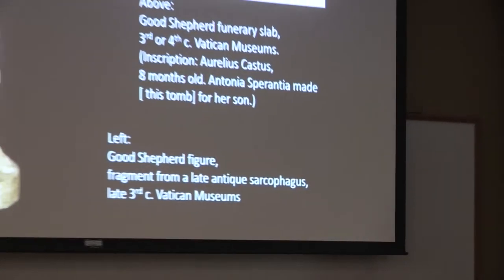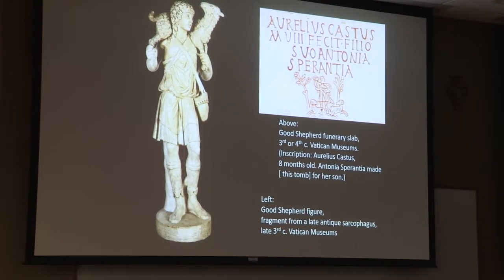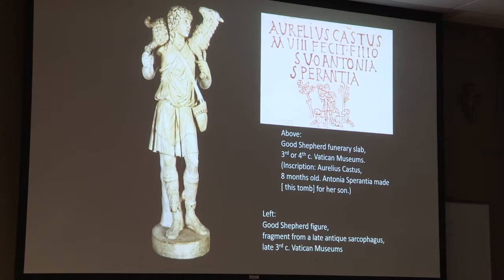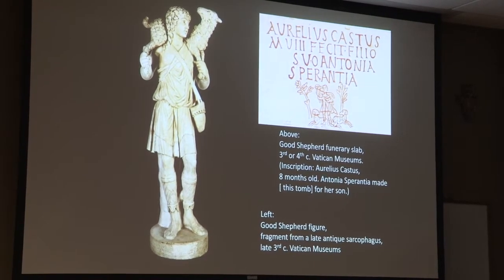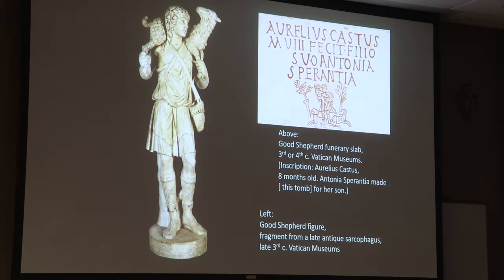We start with two works from the early centuries of the Church. The figure on the left is an independent sculpted figure of the Good Shepherd with his sheep on his shoulders, detached from a late antique sarcophagus and now in the Vatican. Above it is an engraving plaque from a funerary monument showing Christ as the Good Shepherd, again bearing the sheep on his shoulders, in a grove of trees with sheep around the base.